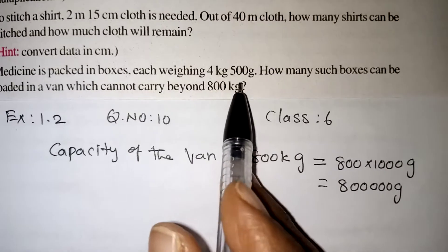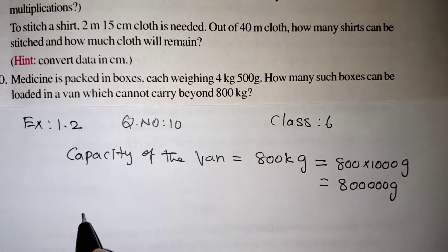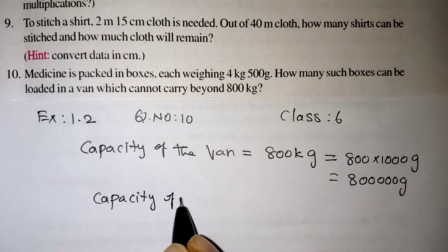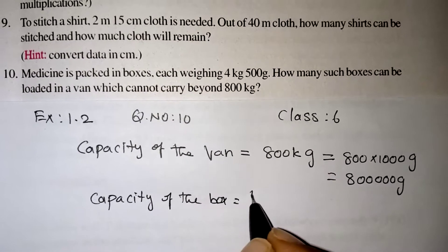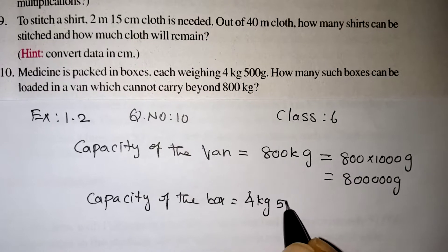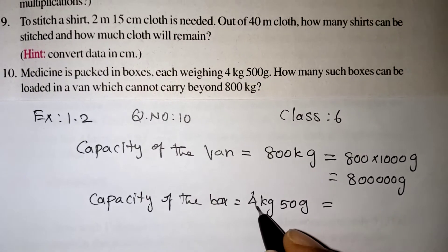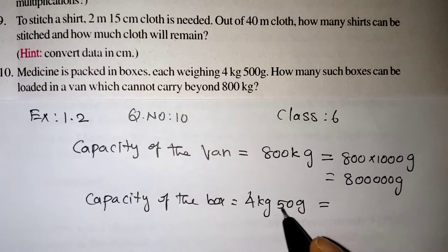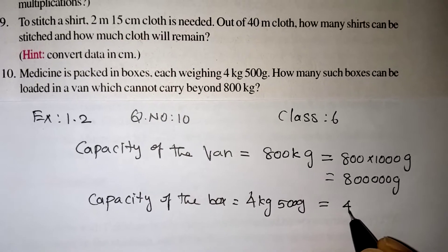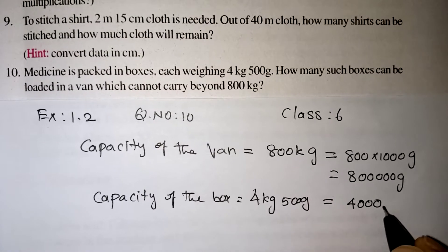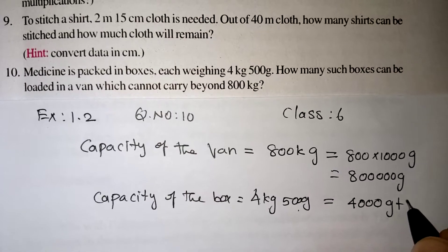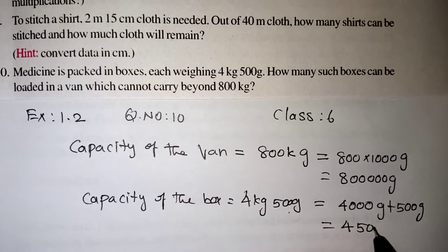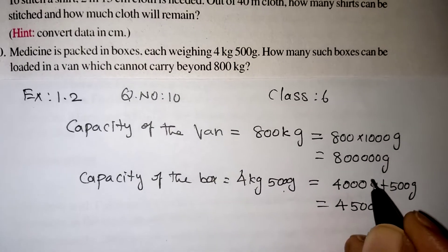Now the weight of one medicine box is given. Capacity of the box is 4 kg and 500 grams. 4 kg is 4000 grams, so 4000 grams plus 500 grams. Totally, each box is 4500 grams. How many such boxes can be loaded in the van?